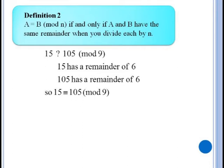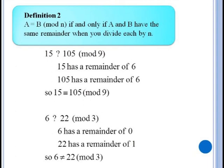Two more quick examples. Compare fifteen and one oh five mod nine. If we divide both numbers by nine we see that fifteen has a remainder of six and one oh five has a remainder of six. So fifteen is equivalent to one oh five mod nine. How about six and twenty two mod three? Three divides evenly into six leaving a remainder of zero. But three into twenty two has a remainder of one. Since the remainders are different, six is not equivalent to twenty two mod three.